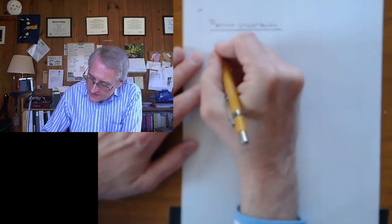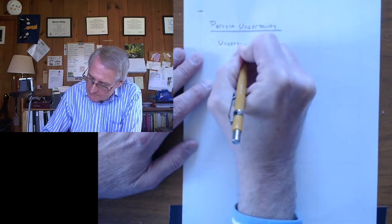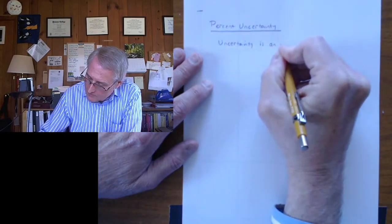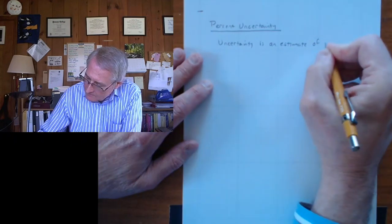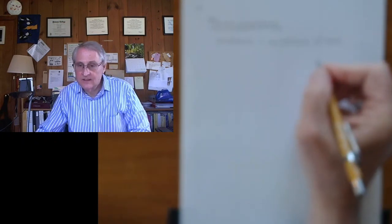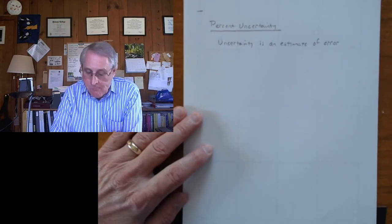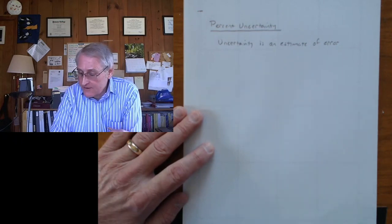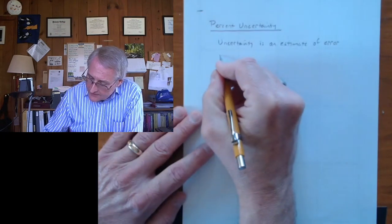Can you focus there? So we don't know what the error is, but we do get an estimate for it. Now you're already familiar with percent error from Physics 1 lab or from the handouts. So percent uncertainty is the same idea.